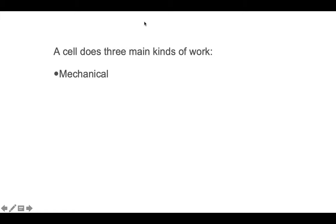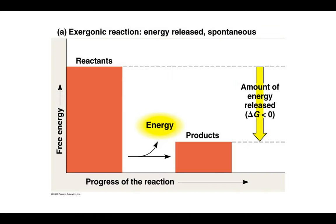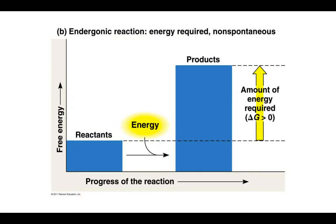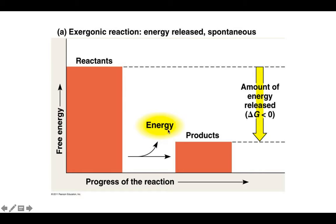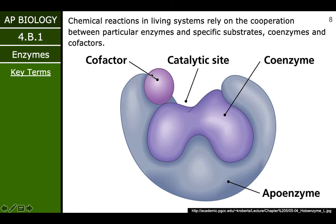The cell will do three main kinds of work — work is just really anything that you're actually physically doing. So it will do some mechanical work, it will transport things — that's what we talked about in Chapter 7, transporting ions maybe against their concentration gradients — and it will also do some chemical work, actually changing chemicals through chemical reactions. Now it's going to do this through what we call energy coupling, which is going to be using an exergonic process to fuel an endergonic one. Energy was released, and the cell will use that energy to make something else happen. This will happen again and again in the metabolism of organisms and cells.